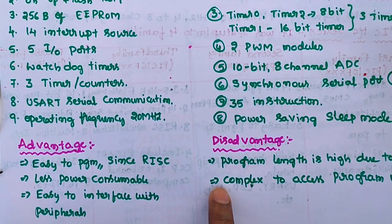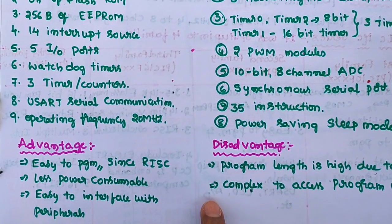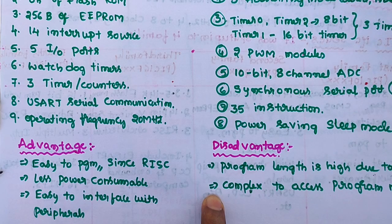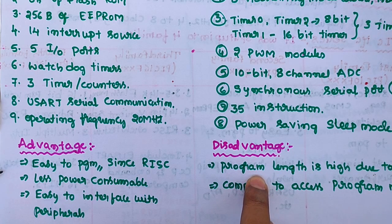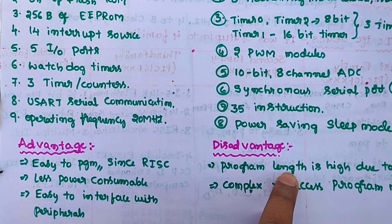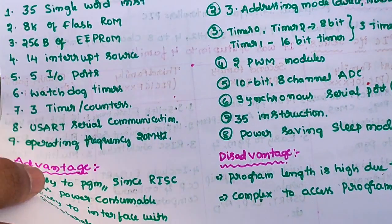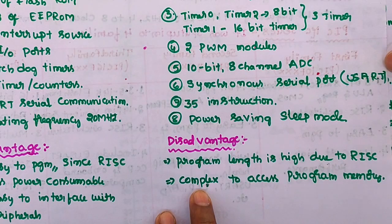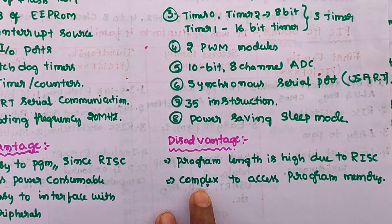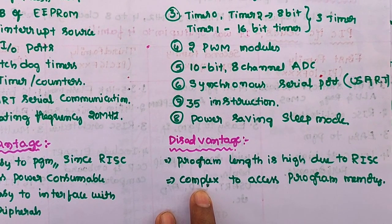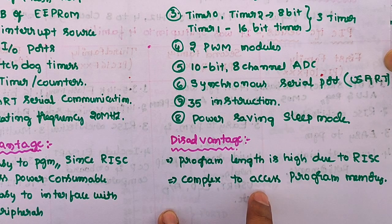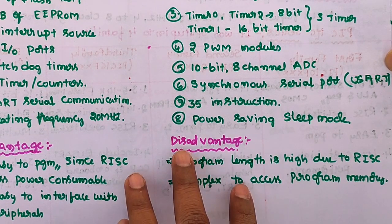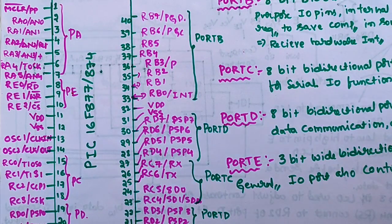A major disadvantage is that because of the limited instruction set, programs become lengthy since the same instructions must be used repeatedly. This is due to the RISC processor architecture. Additionally, it is complex to access program memory because the device is accumulator-dependent — when the accumulator is performing an operation, code memory cannot be accessed in parallel, which is a significant drawback.